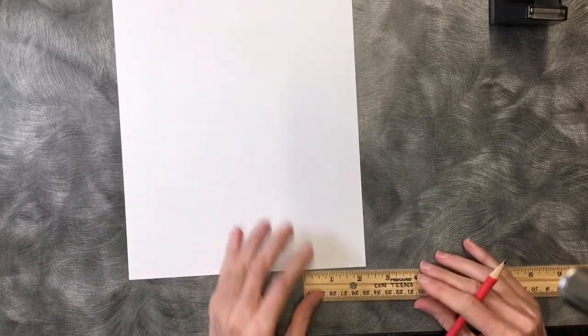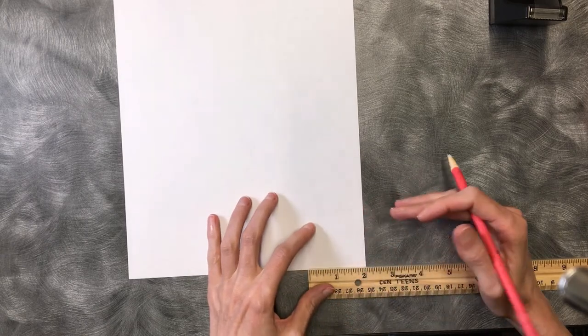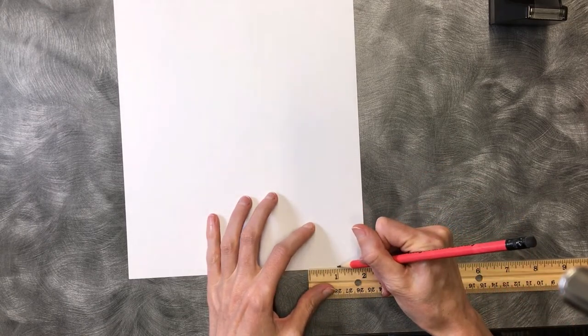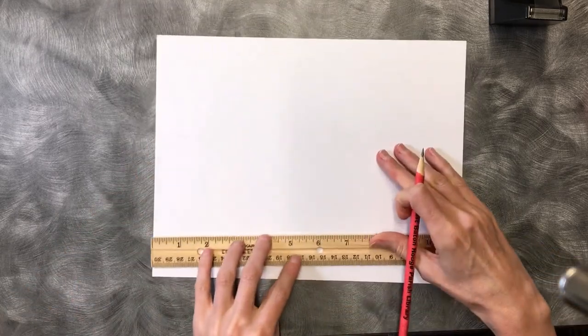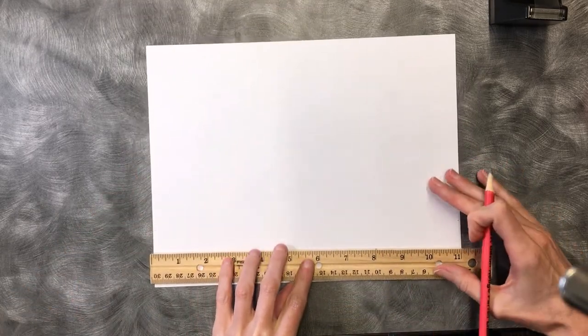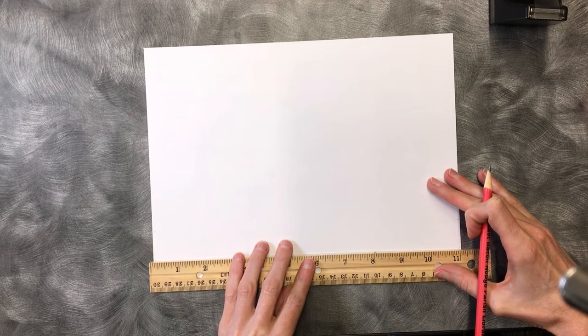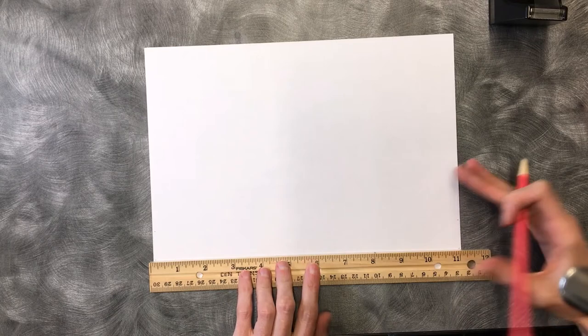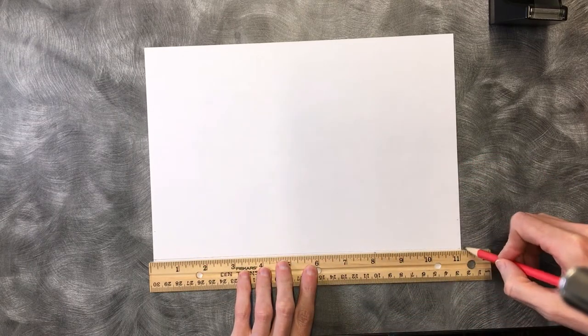Right on the opposite side, mark one inch and two inches. Take my ruler and I'm going to connect the dots for the one inch hash marks that I made. Draw a line and you can go all the way across.